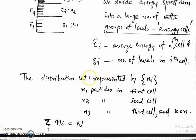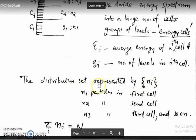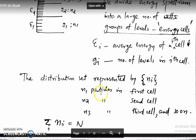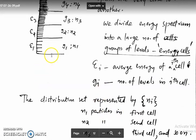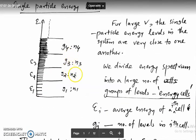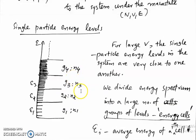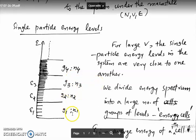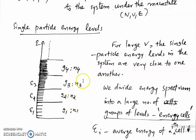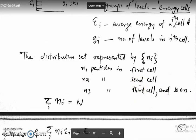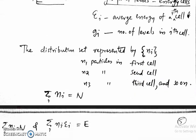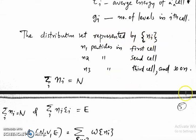The distribution set is represented by {n_i}, which specifies n_1 number of particles in the first cell, n_2 particles in the second cell, n_3 in the third cell, n_4 in the fourth cell, and so on. So we have a distribution set that tells us how many particles are in each cell.